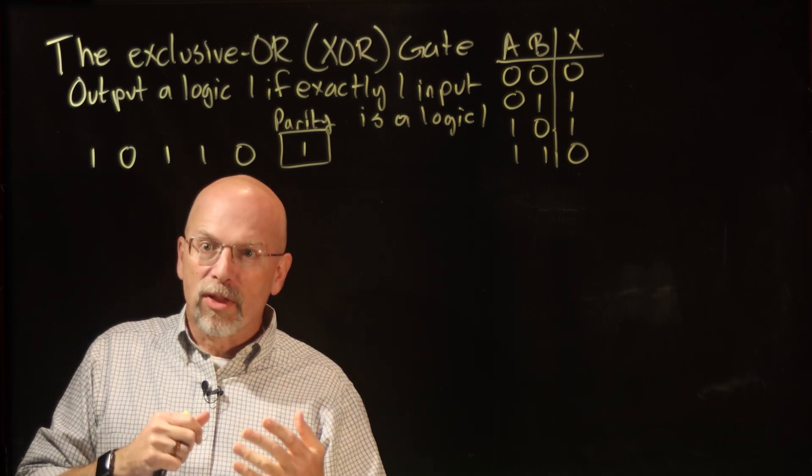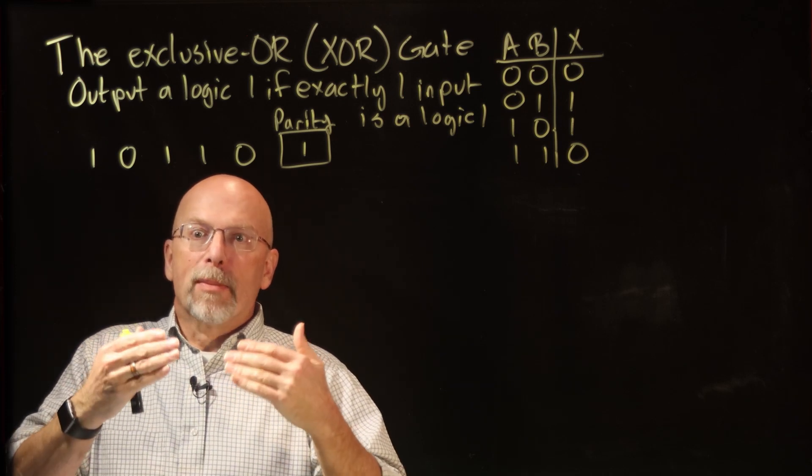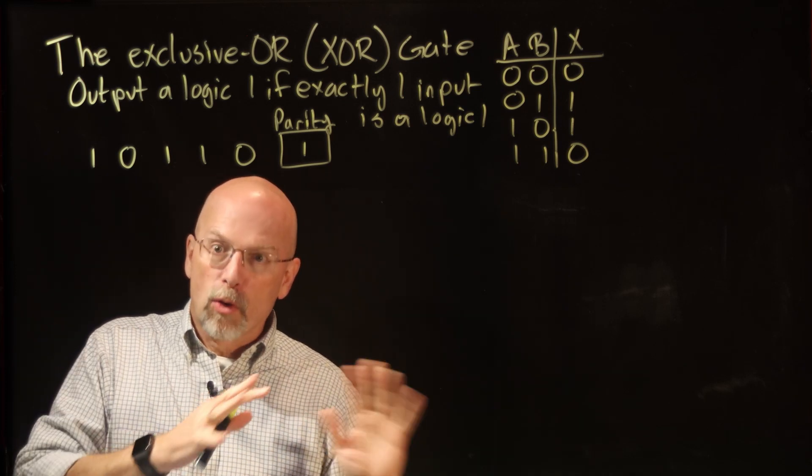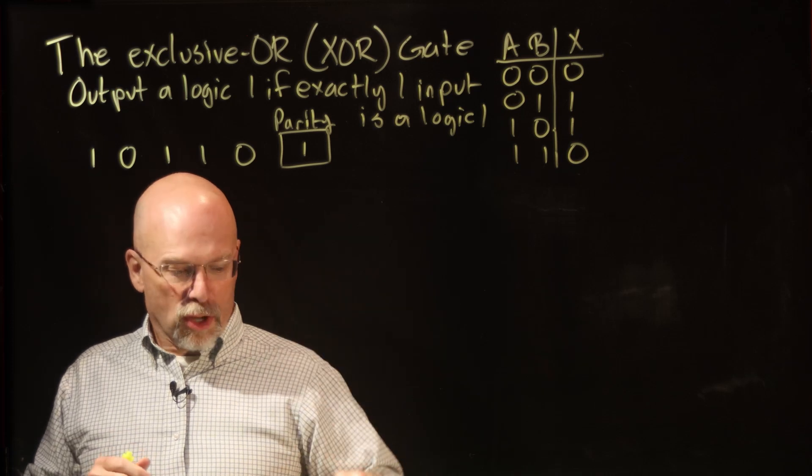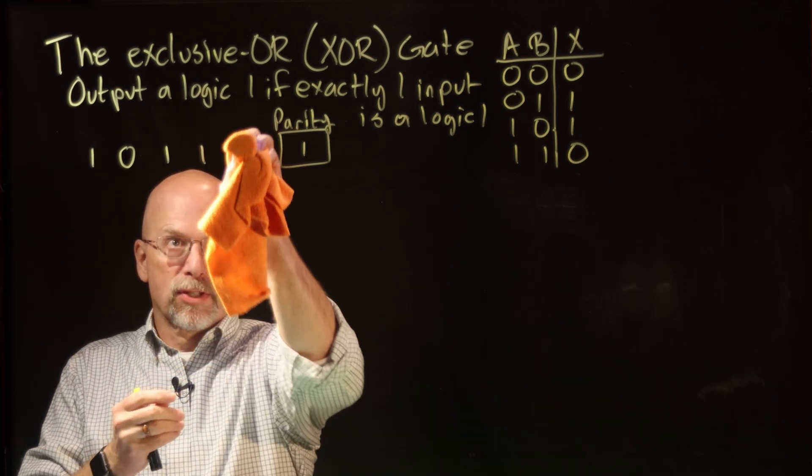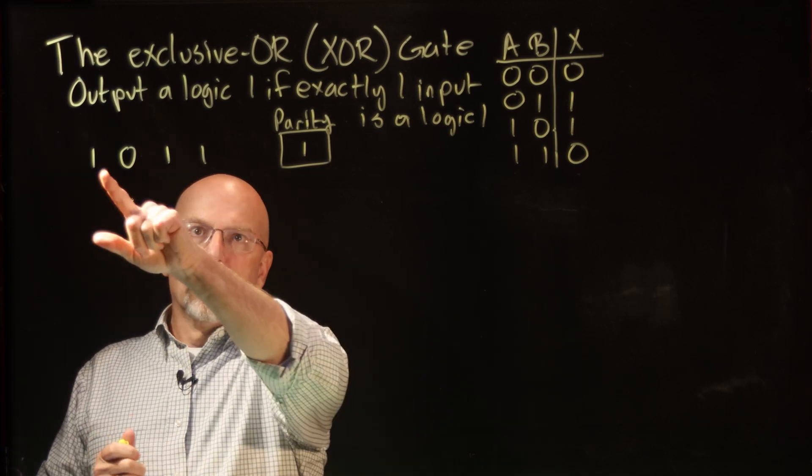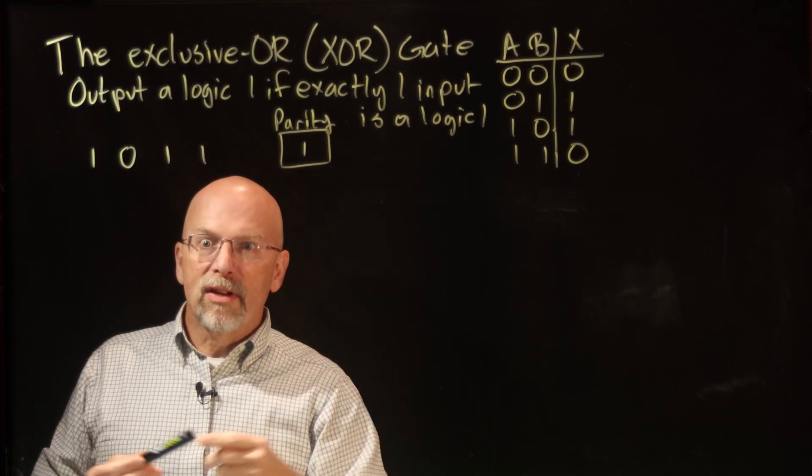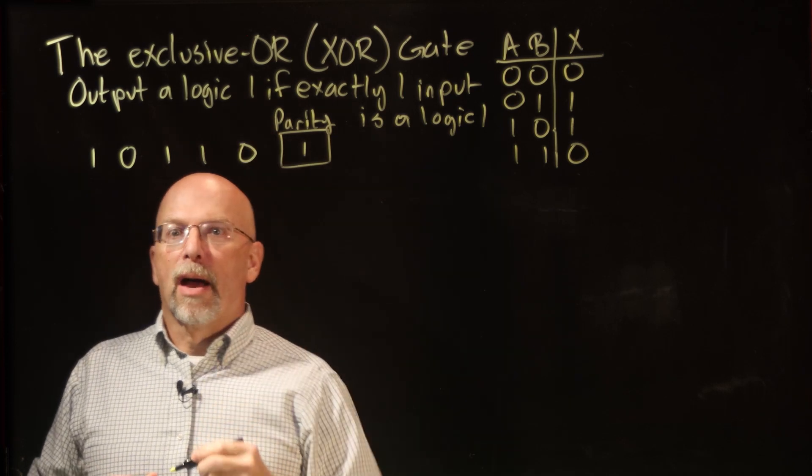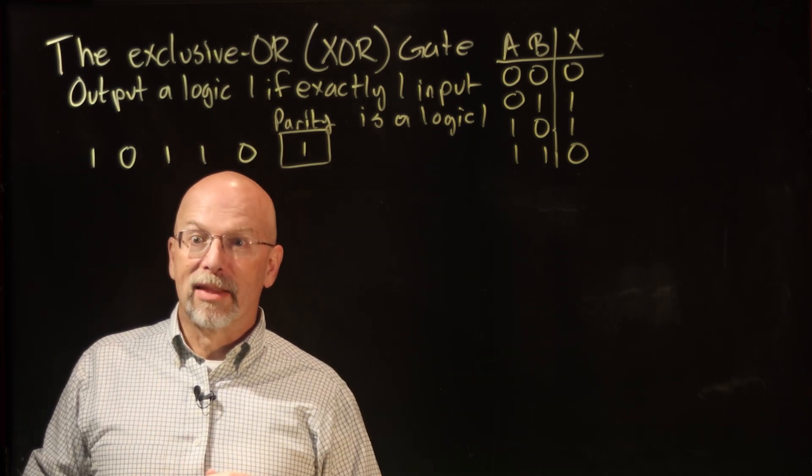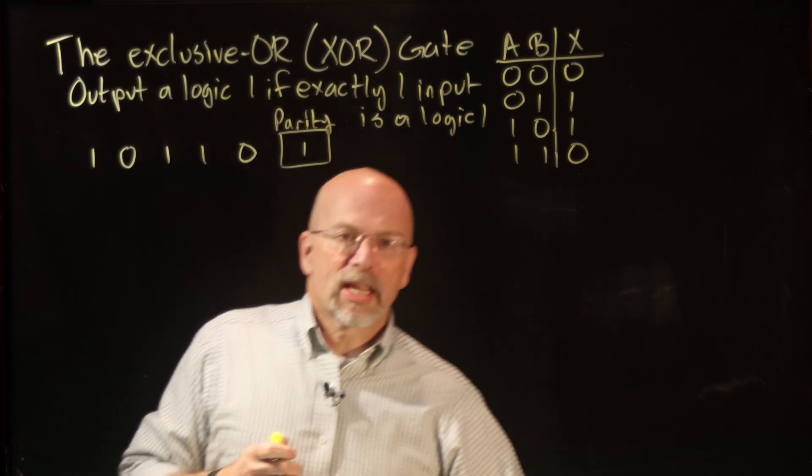Some versions of RAID arrays, these multiple disks in an array to act as a single disk, use a method like this in combination with other methods to solve the problem of what happens if one of the disks goes bad. If this 0 went away, I look at all the 1s, realize there's an even number, and put a 0 there.